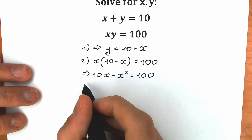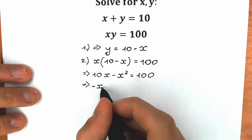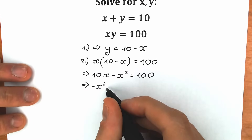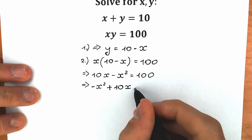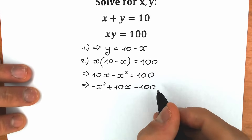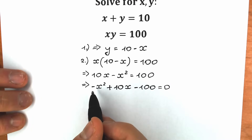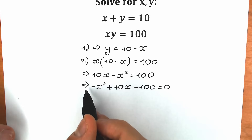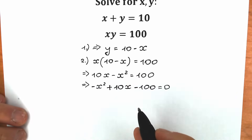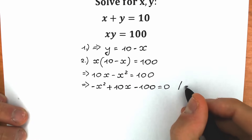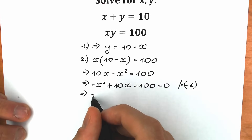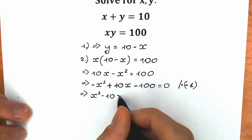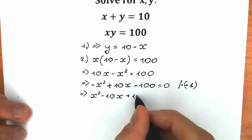So we write: negative x squared plus 10x minus 100 equals 0. Now let's multiply both sides by minus 1, because we prefer a positive leading coefficient. As a result, we have x squared minus 10x plus 100 equals 0.